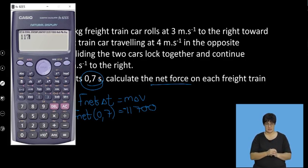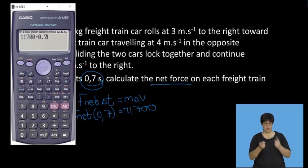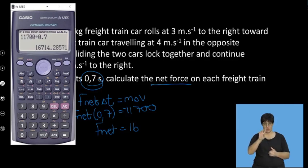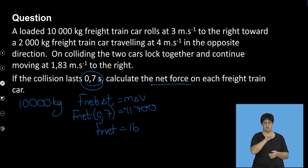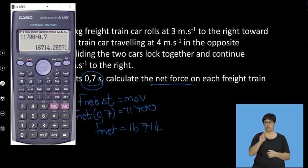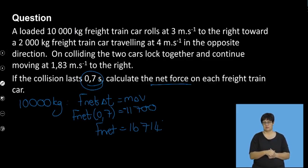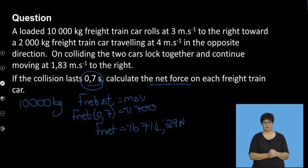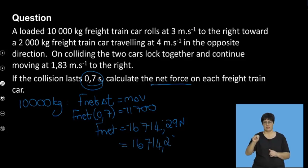Dividing by 0.7 on both sides, we get 16,714.29 newtons. And since we divided by a negative, the result is negative — so that's 16,714.29 newtons to the left.